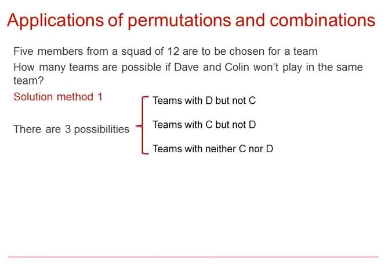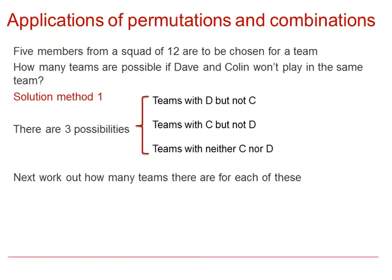In the first method, we look at three possibilities: teams with Dave but not including Colin, teams with Colin but not including Dave, and teams with neither Colin nor Dave. Using combinations, we can work out how many teams there are for each of these three possibilities. If a team has Dave but not Colin, then two choices have been made and there are four squad members to choose from the ten other people.